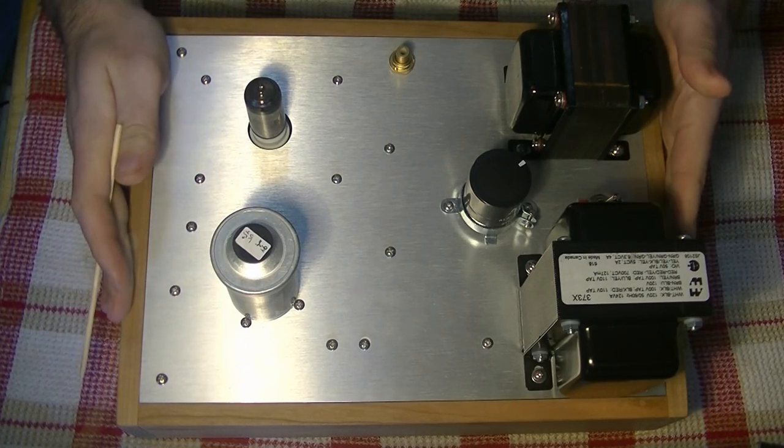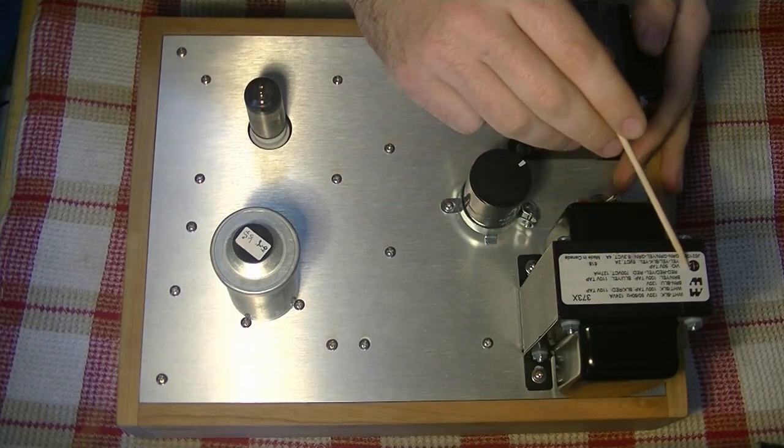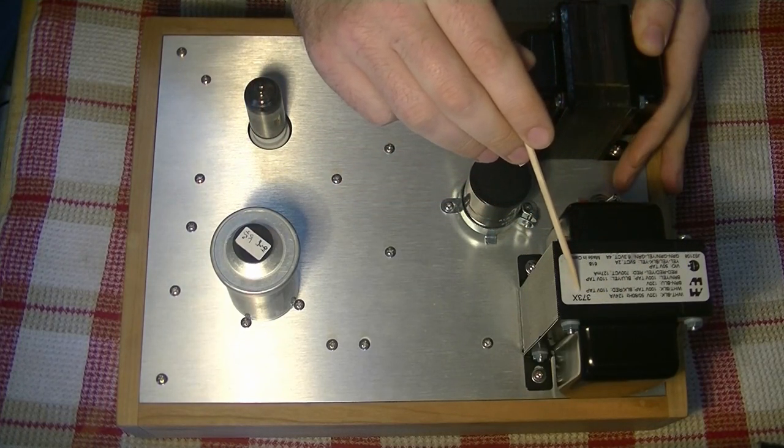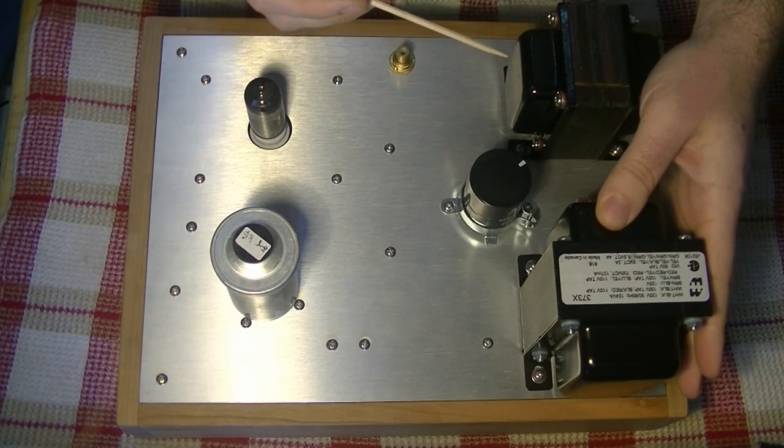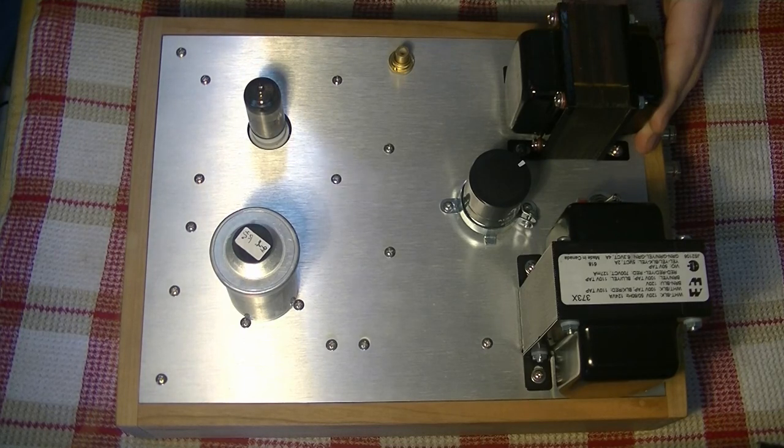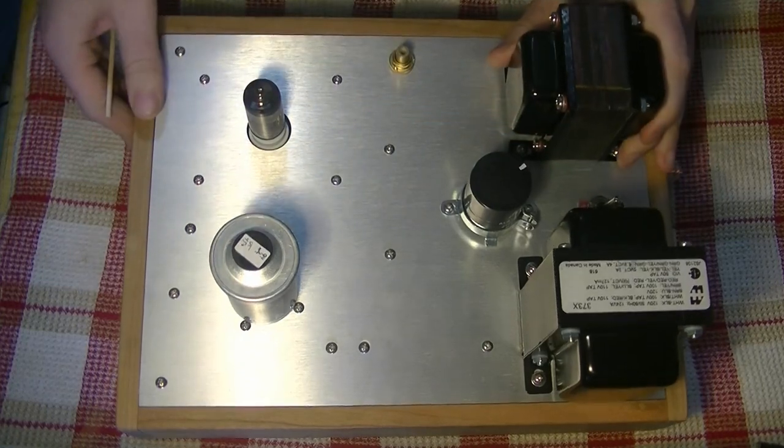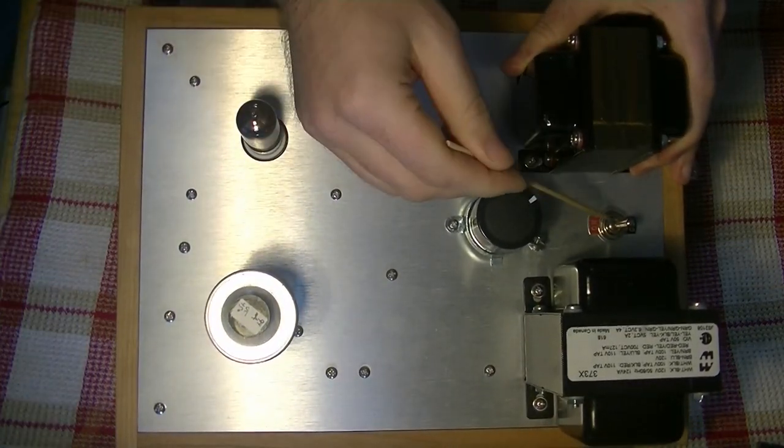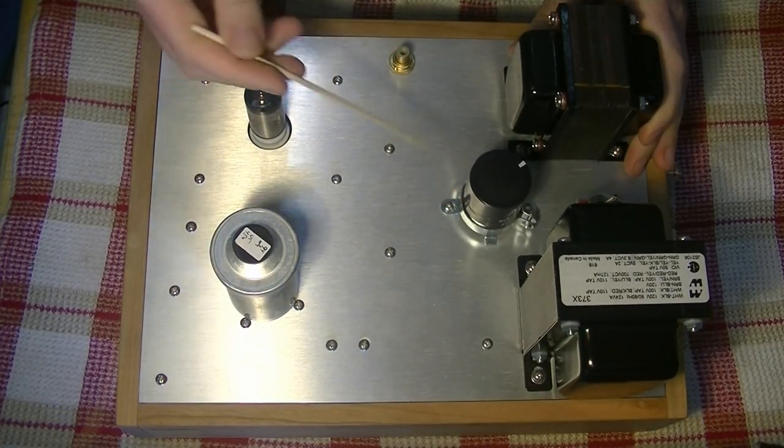So here's the top view. Right over here, we've got the Hammond 373X power transformer. That's that big guy right here. This is our output transformer. In the middle, we have our standard power switch. It might be a little hard to see on camera. This is our main filter capacitor.